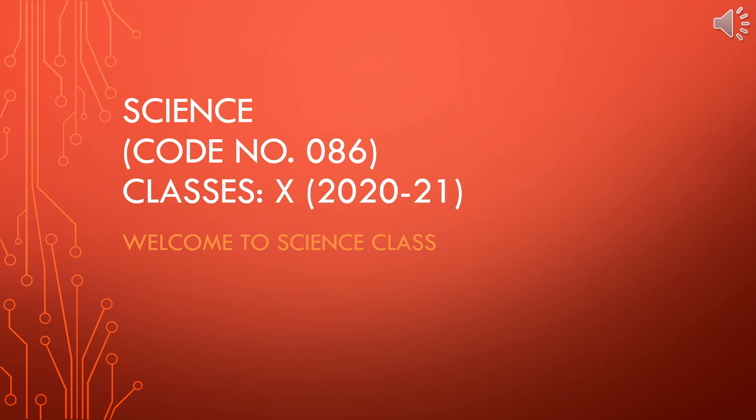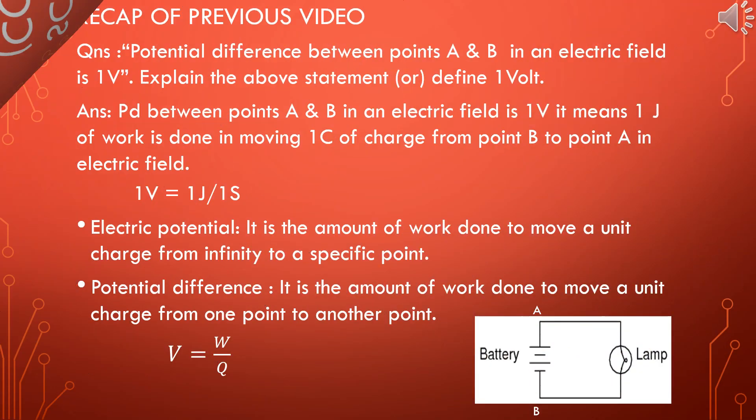Hi everyone, welcome to another science class — Physics Electricity Part 3. Dear students, I would like to check your previous knowledge with a simple question. The question is: the potential difference between points A and B in an electric field is 1 volt. Explain the above statement.